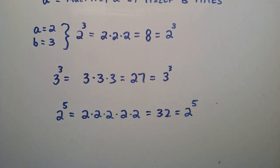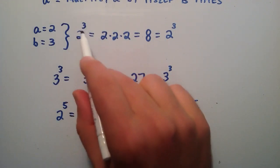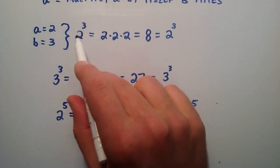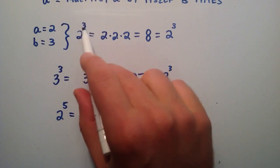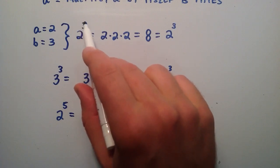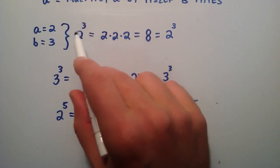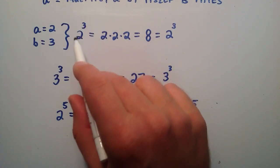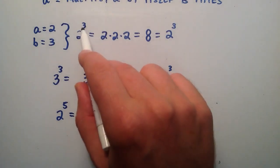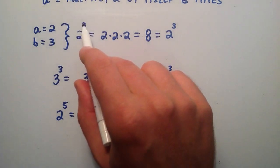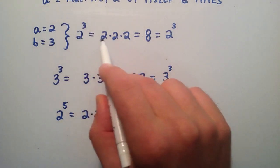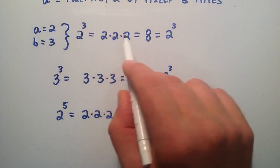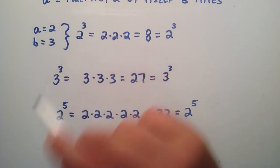So that's basically how exponents work. You have some base number here, and a power number here. The base number tells you what number you're going to multiply together, and the power tells you how many times you're going to multiply that number together by itself.